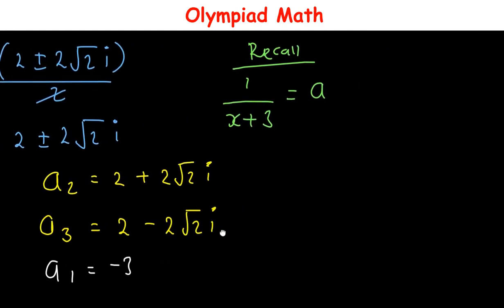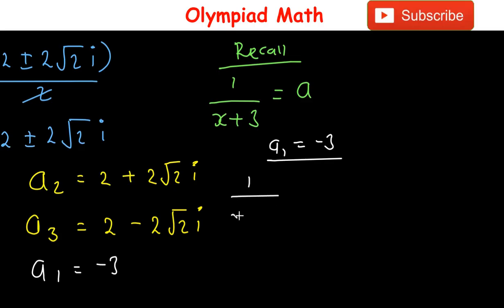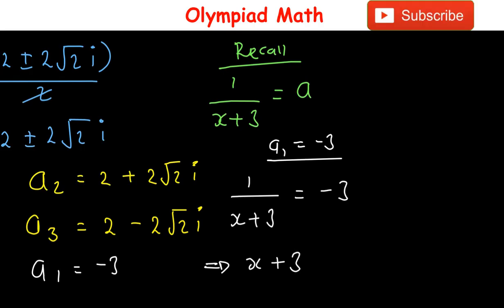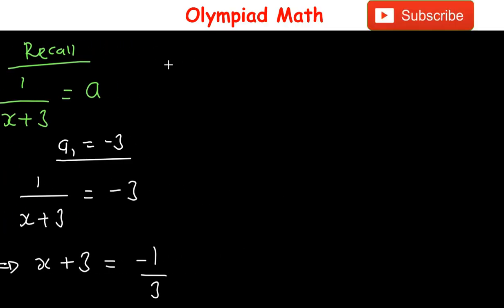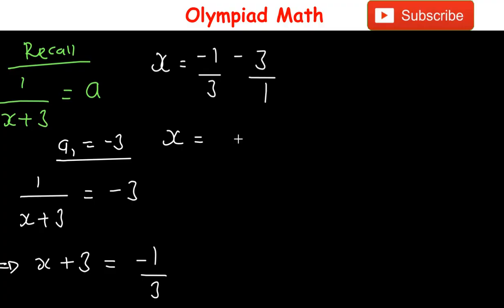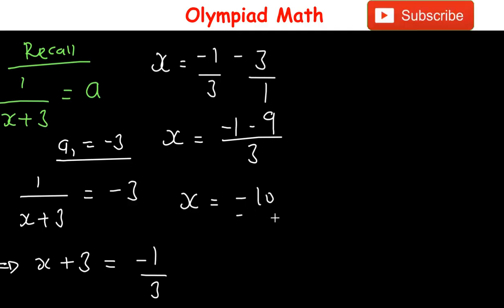For a₁ = -3: 1/(x+3) = -3, so x+3 = -1/3. Moving +3 to the right-hand side, x = -1/3 - 3 = -1/3 - 9/3 = -10/3. This is the first value of x.